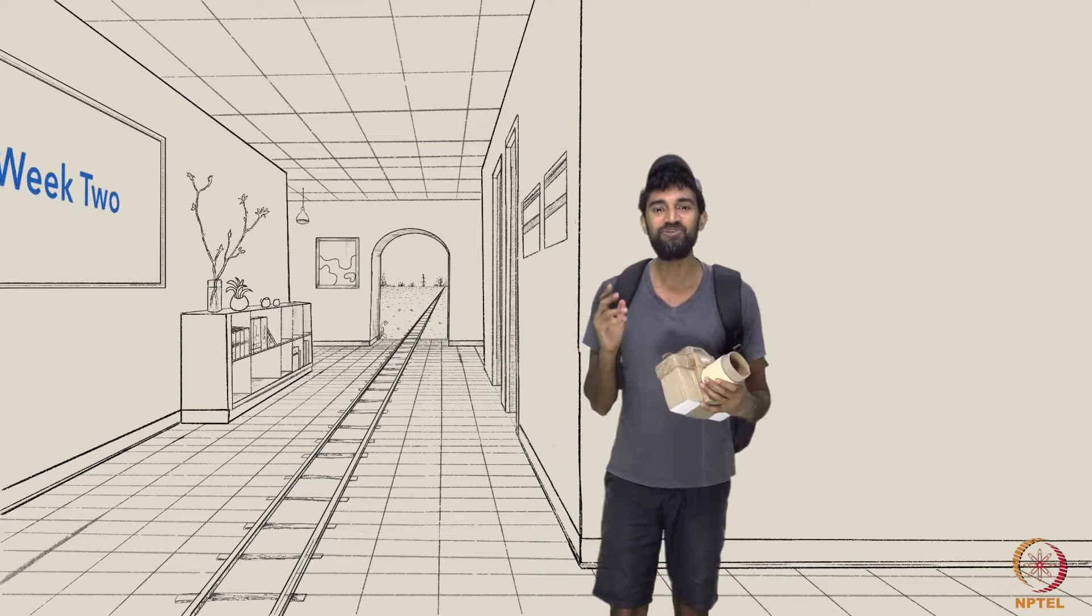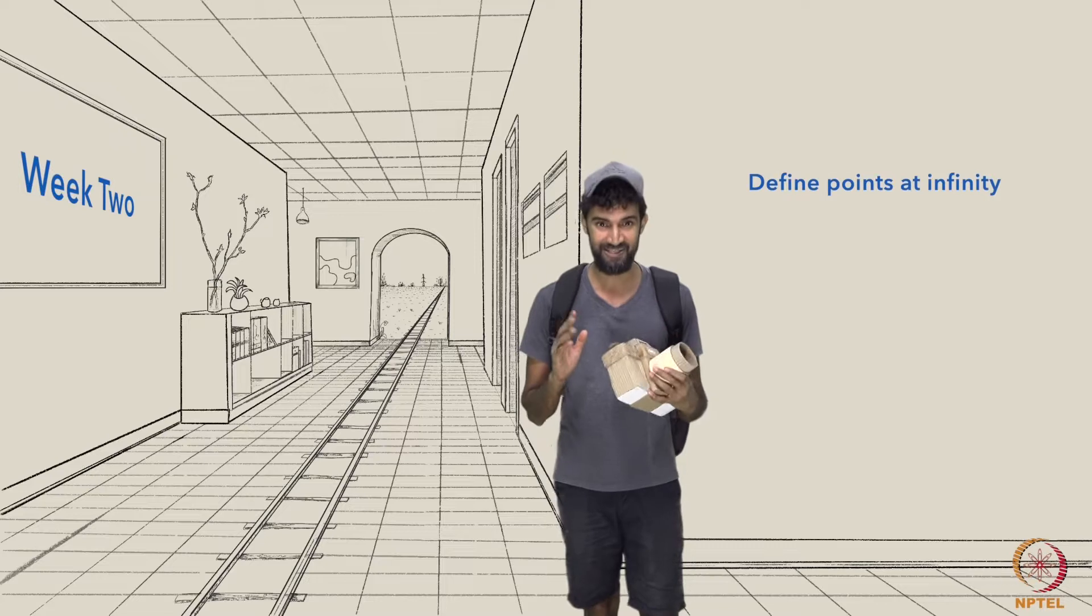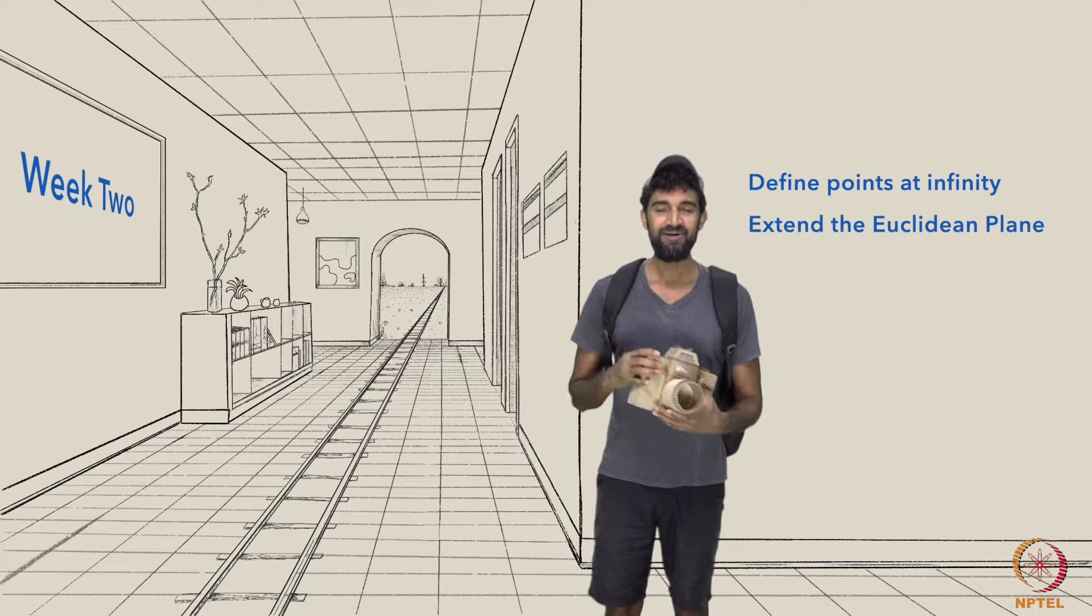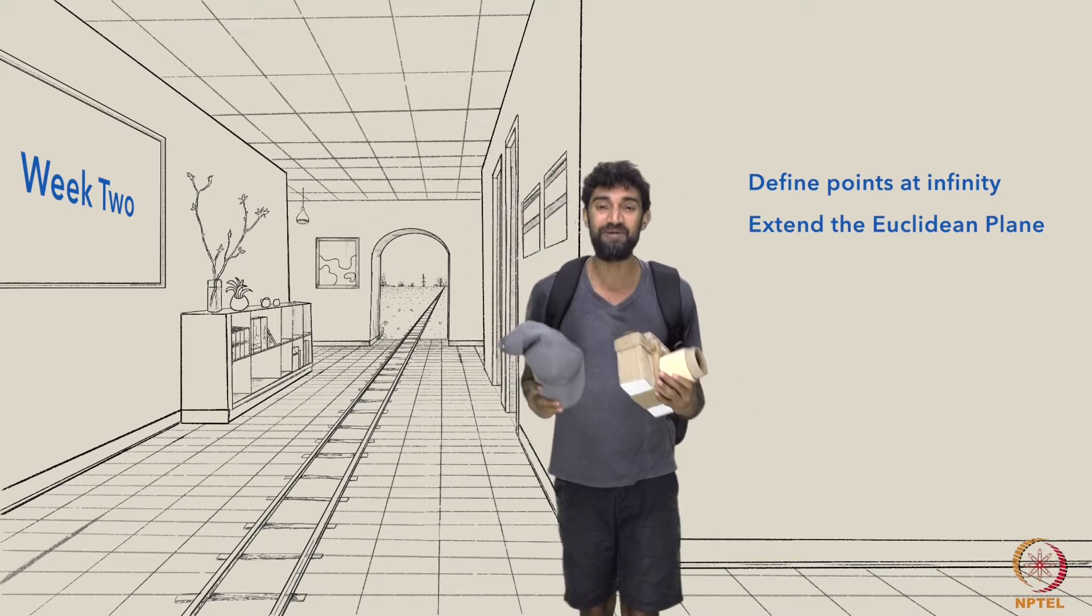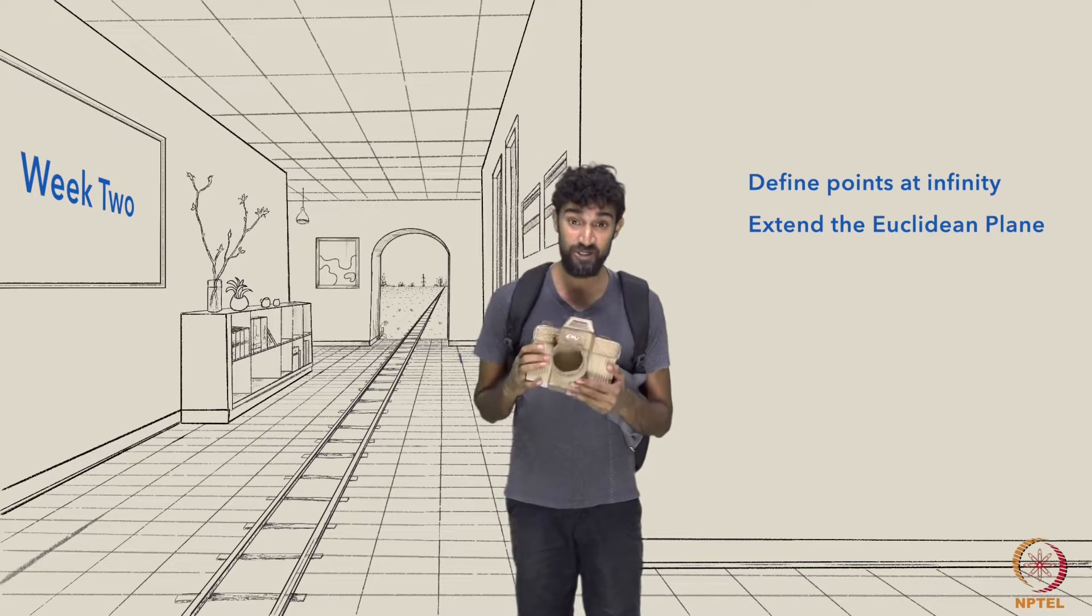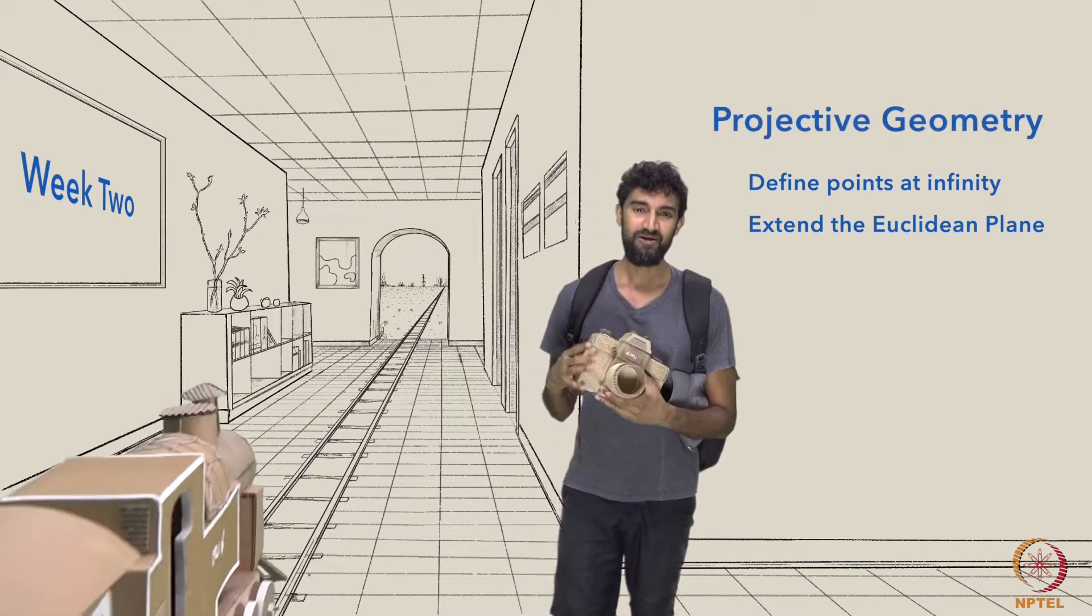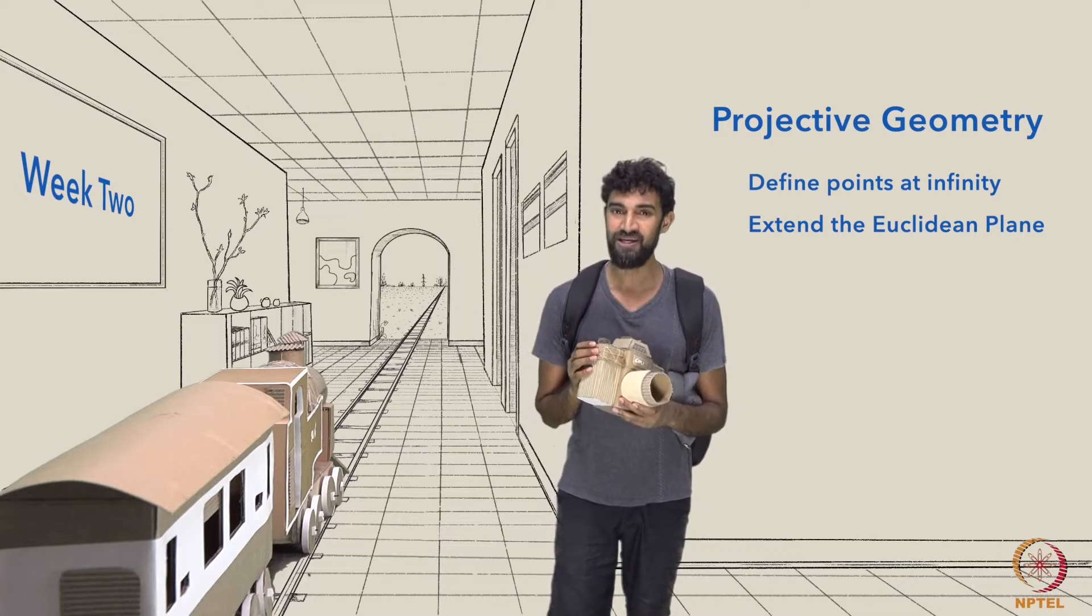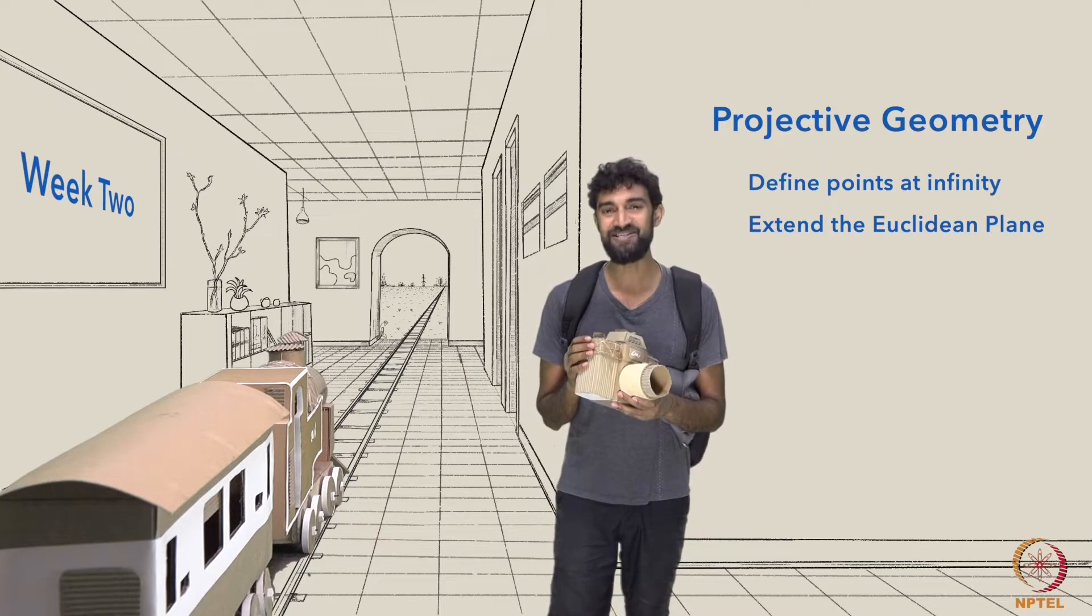This week, we'll define points at infinity precisely, and in the process, expand our notion of the Euclidean plane. We'll then look at some basic features of the geometry of this extended plane, known as projective geometry. We'll see that projective geometry is far more symmetric than Euclidean geometry, and full of surprising properties.